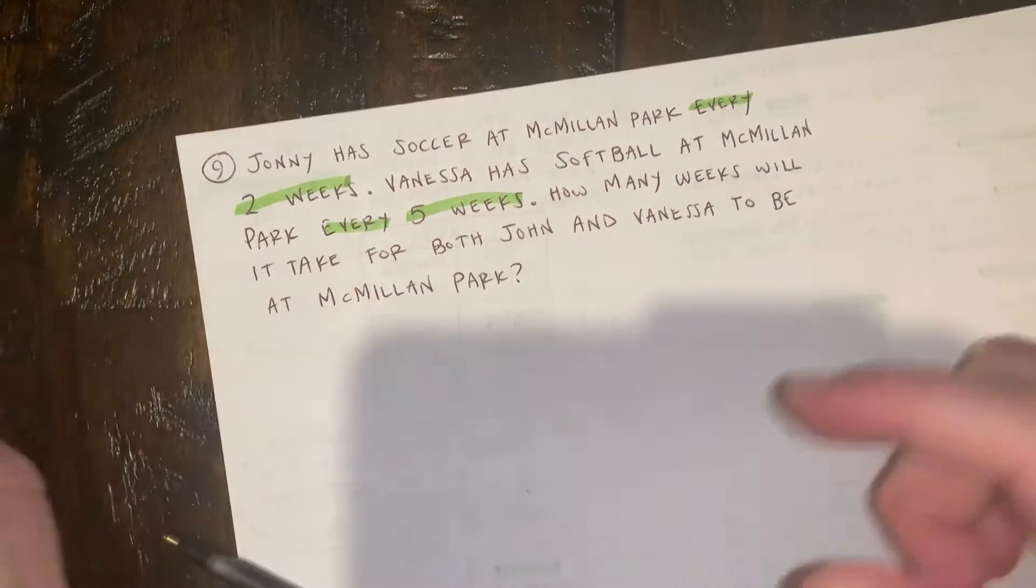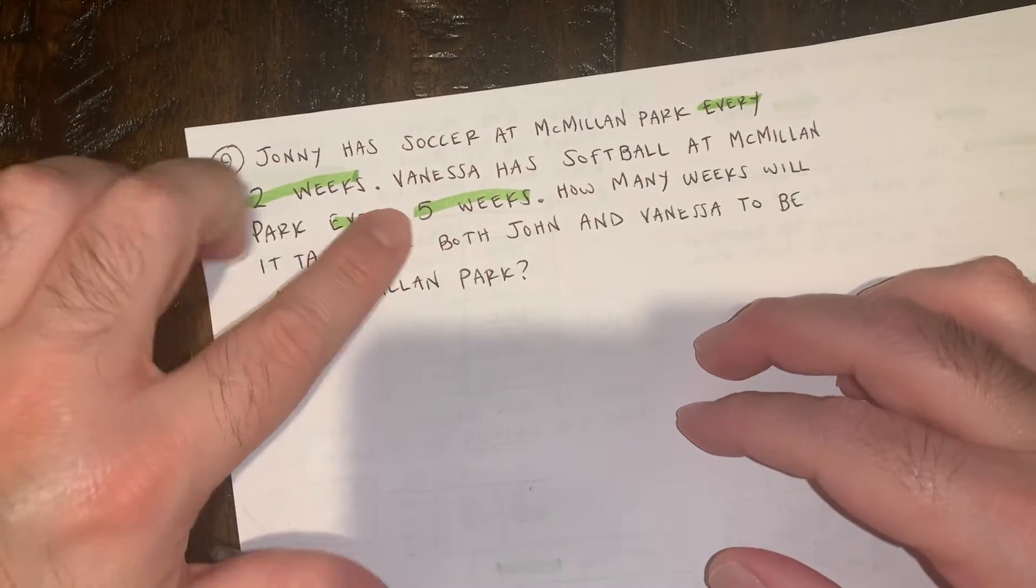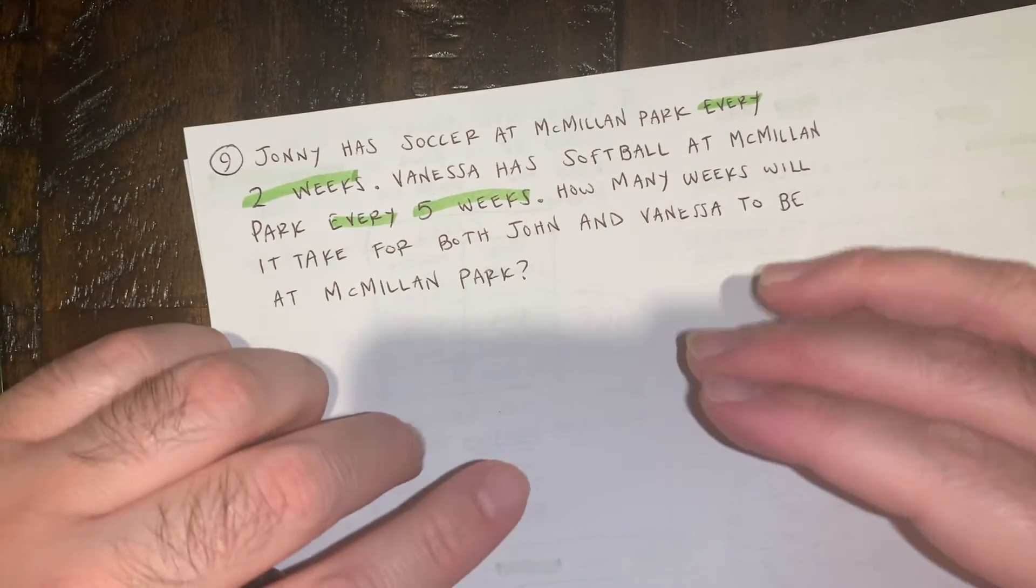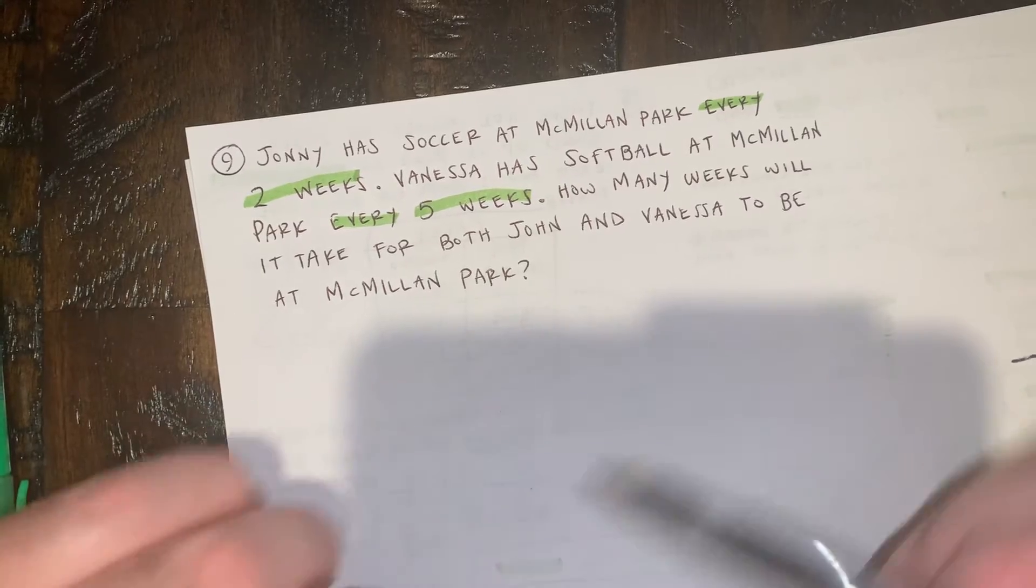So if Johnny is going every two weeks and Vanessa is going every five weeks, eventually, at one point, they're gonna be at Macmillan Park at the same time. So this is how we're gonna use LCM.